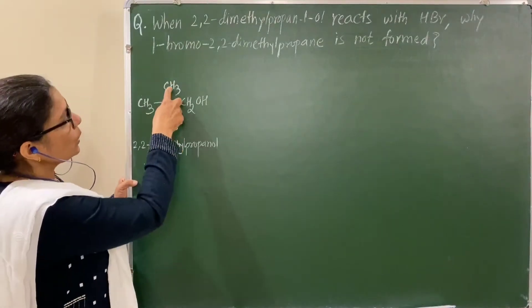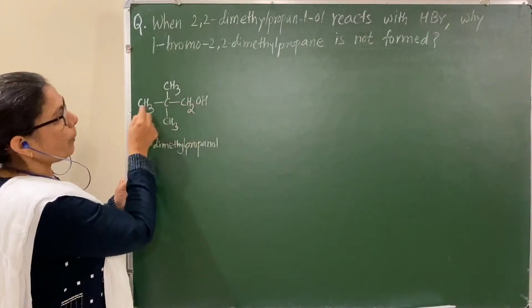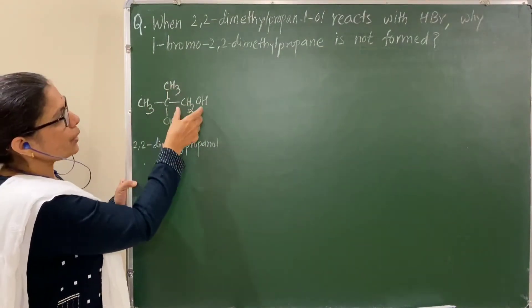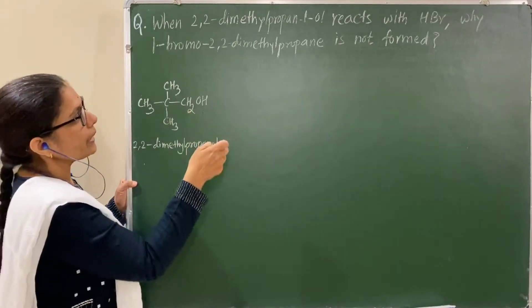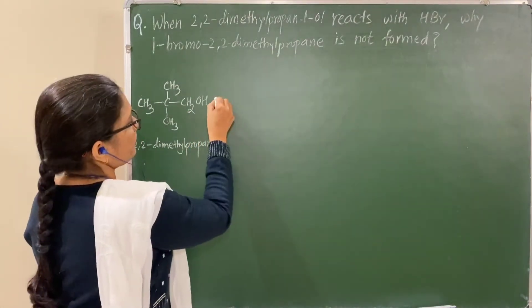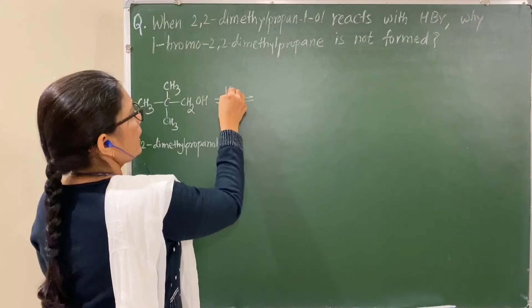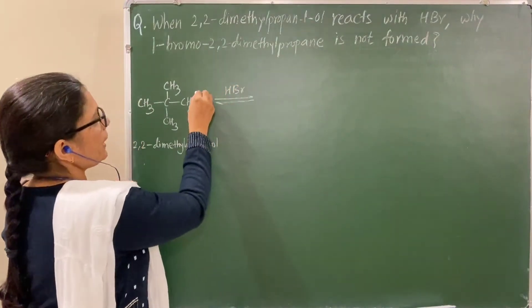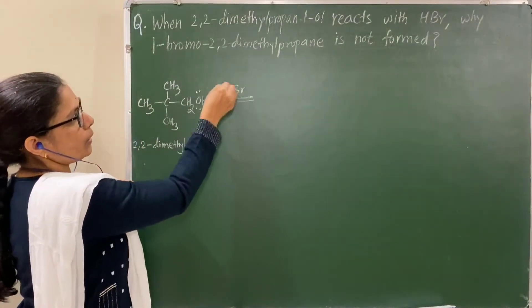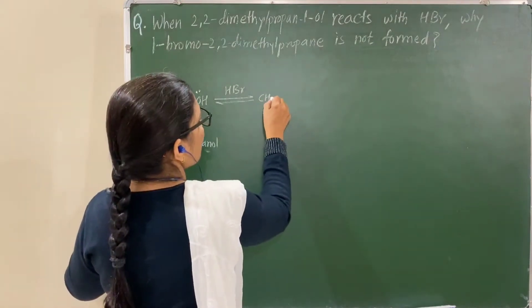Here is 2,2-dimethylpropanol, a branched primary alcohol. When it reacts with HBr, protonation takes place at the lone pair of electrons.